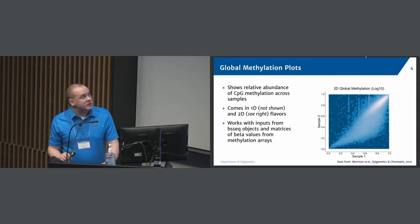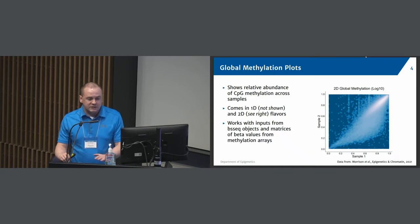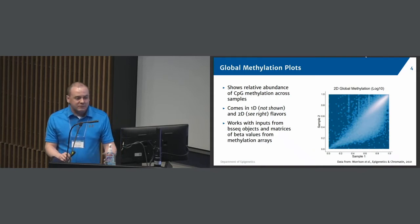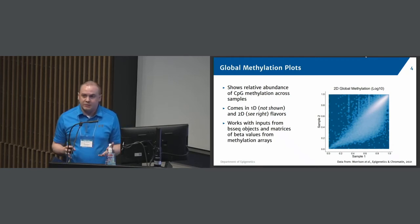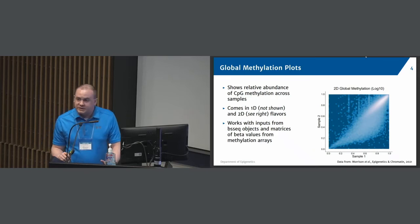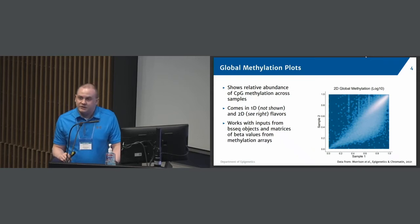So the rest of the talk will be just going over the different types of plots that exist already and then what we plan to do in the future. So just to start, we have your standard global methylation plots where you can look at the density of methylation values across samples, whether it's 1D, which is not shown here, or 2D, which is shown, where you can compare two samples on a per CPG basis. This works with inputs from BS-seq objects, as well as those who do epic arrays or 450Ks, you can use beta values from these matrices as well.